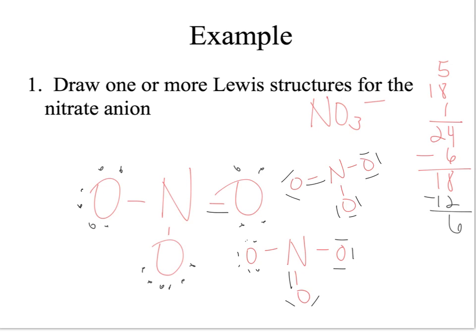So we have three resonance structures for the nitrate anion, and we'll continue in the next video.